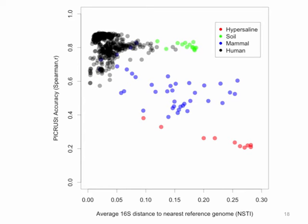Looking at a PCA plot of body sites, triangles are PICRUSt predictions and circles are actual real shotgun sequencing used as the gold standard. We see pretty good overlap — body sites cluster with their appropriate body site. For accuracy using Spearman R correlation across different datasets, for human data we get an average around 0.9 correlation. On the x-axis is the distance from each 16S to its nearest reference genome — as samples are more diverse and not well represented by reference genomes, accuracy drops. Human gut samples have good reference genomes so we do well; hyper-saline and unusual samples show accuracy dropping.